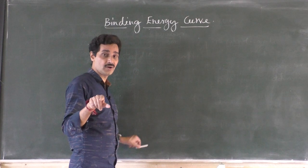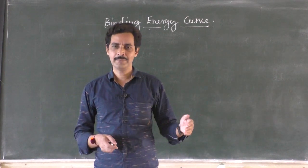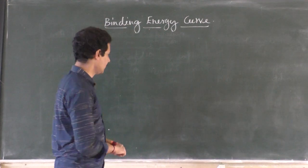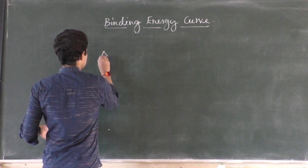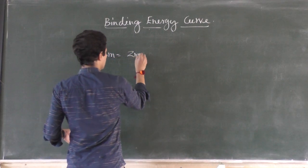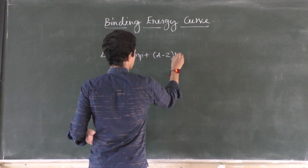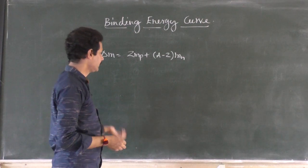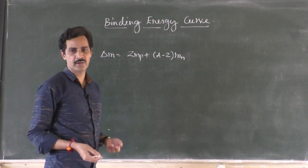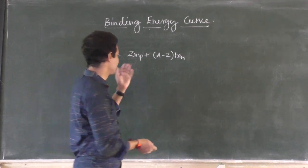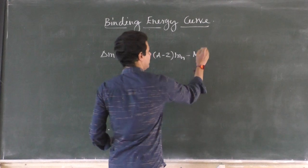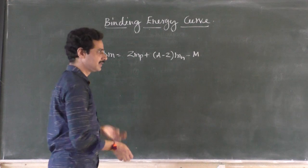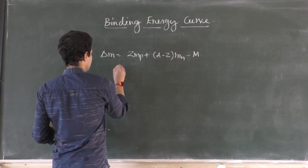The energy equivalent of mass defect is also called binding energy. Remember: mass defect itself is not called binding energy, because mass defect is mass. It can be expressed in either kg or atomic mass unit. Its energy equivalent is binding energy. Mass defect is Z times mass of protons plus (A minus Z) times mass of neutrons — this is the expected mass of the nucleus — but the actual mass of the nucleus is a little less because some mass is lost as energy. This difference is called mass defect.